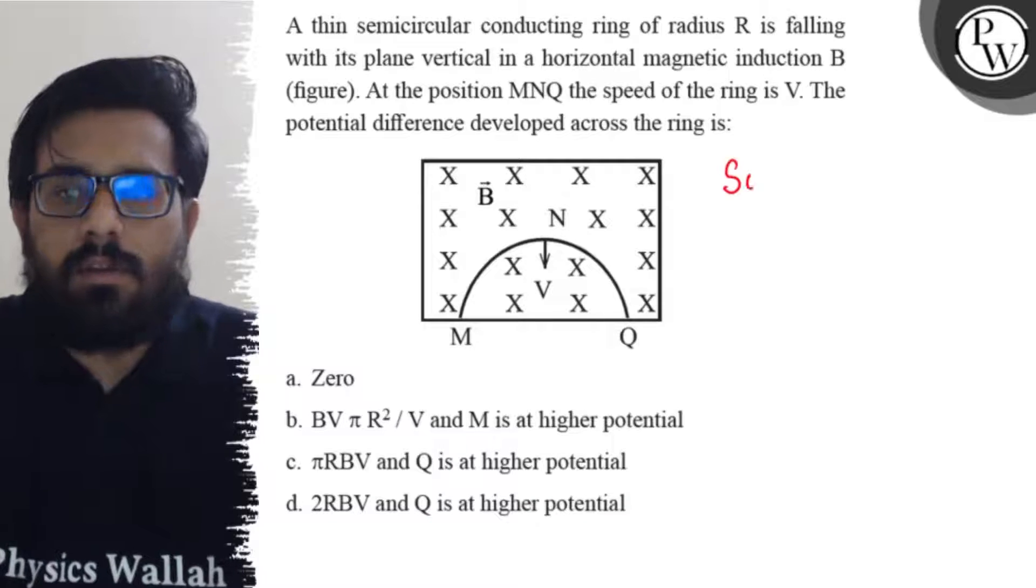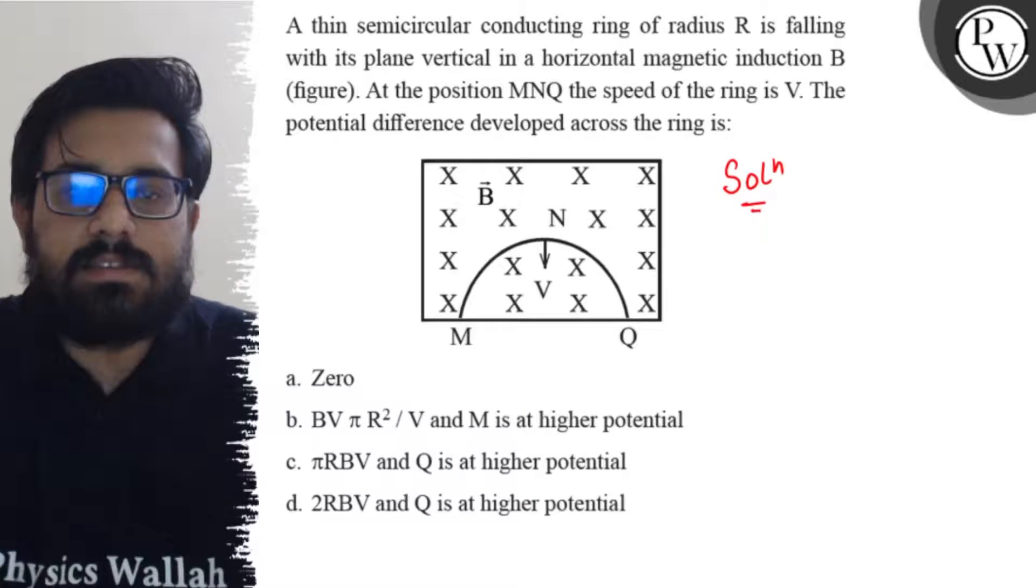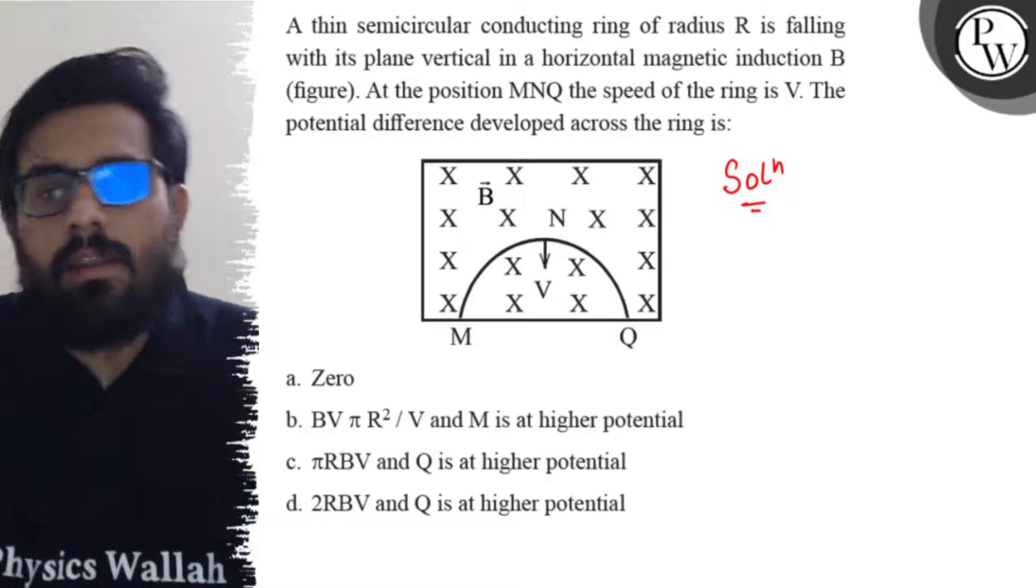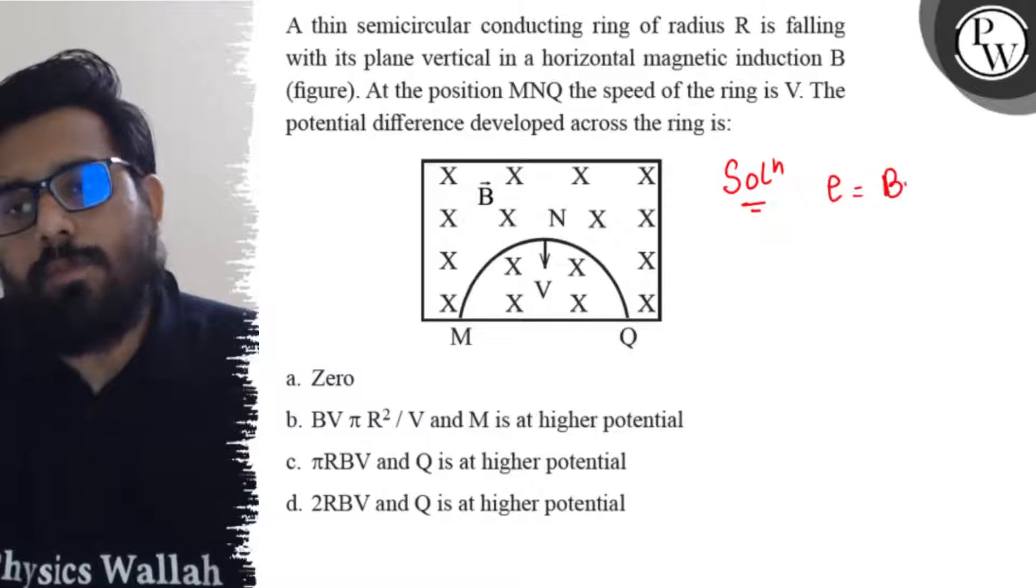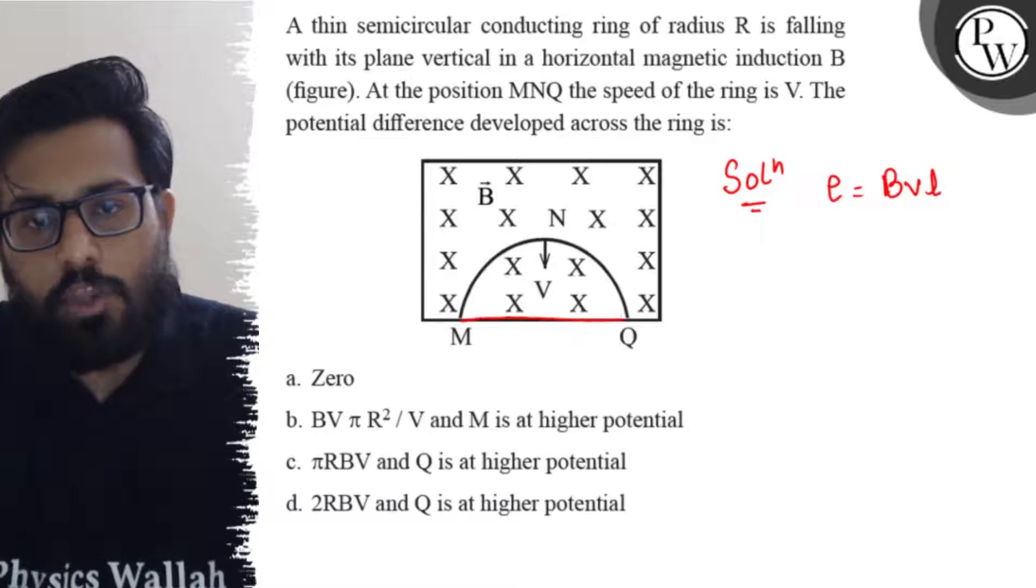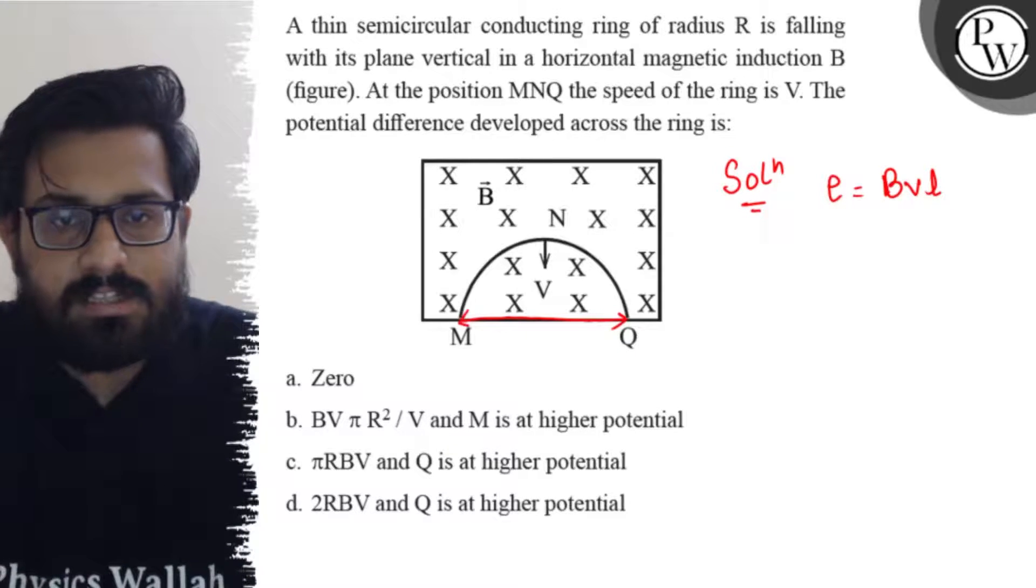So in this question, as we can see the particular part of the ring, we know that the induced EMF will be equals to BVL where L is the shortest distance between M and Q.